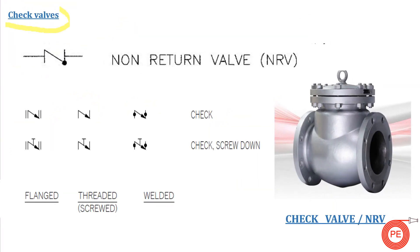The next valve is the check valve or non-return valve. For the non-return valve, you can see there is a 45-degree angle but the dot is shown at the edge, whereas in butterfly valves the dot is in the middle of the line — this is the basic difference between them. In some companies the designer shows an arrow instead; both symbols stand for a non-return or check valve. Again, two lines indicate flanged, nothing indicates threaded, and two dots indicate welded connection.